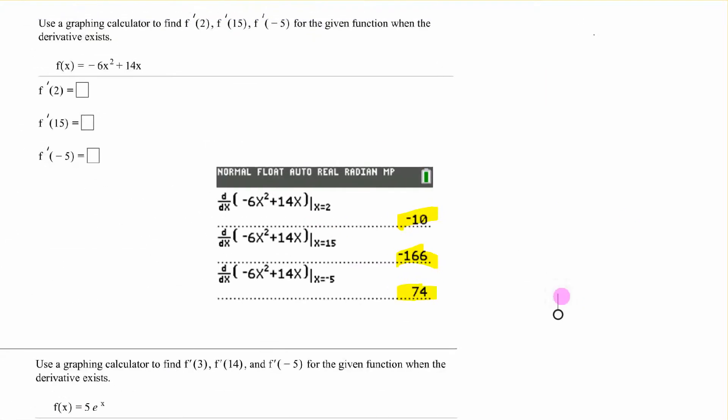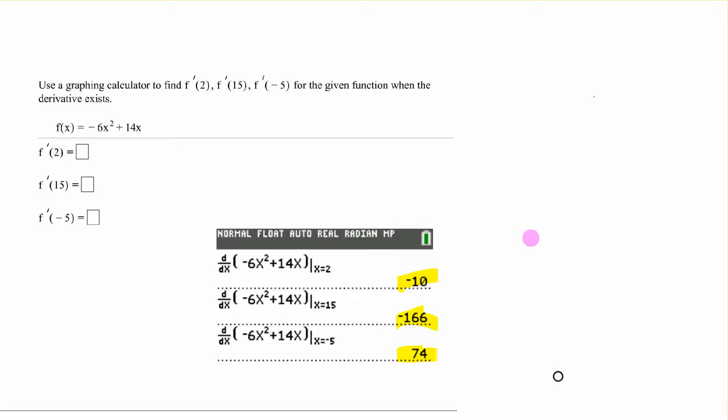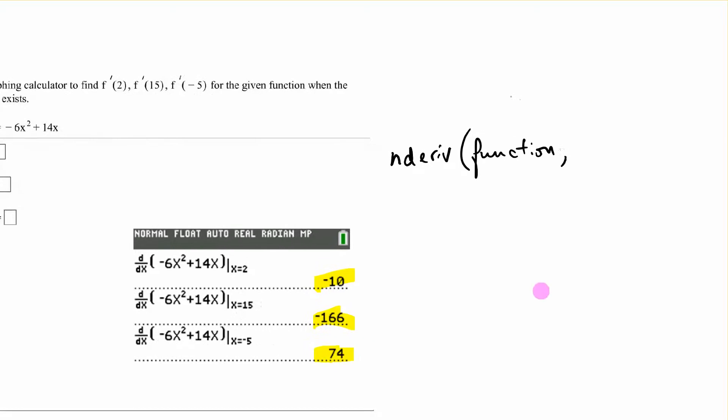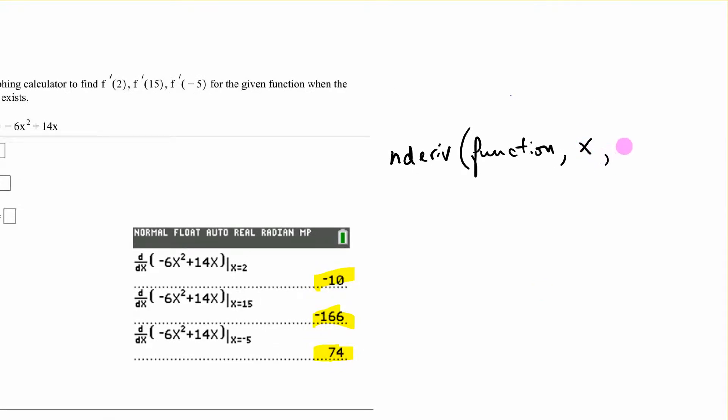This one says use a calculator to find f'(2), f'(15), and f'(-5). Using the calculator and plugging in the function and the x values given, you can find them. If your calculator is different and doesn't have this, it might look different. The older calculators might have n-derivative, and it's waiting for you to put the function comma the variable comma the value you're evaluating at. You would put -6x² + 14x, comma x, comma 2 and hit enter. That's what a TI-83 would look like.